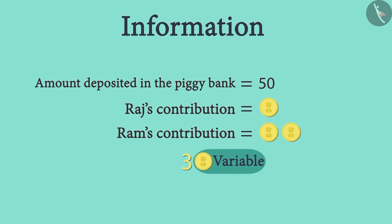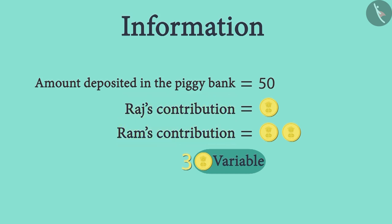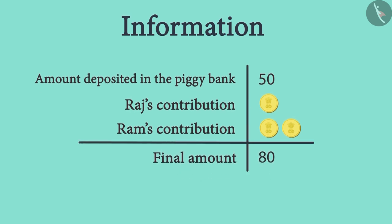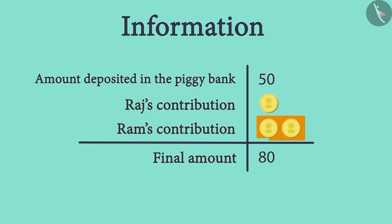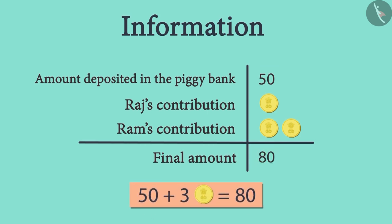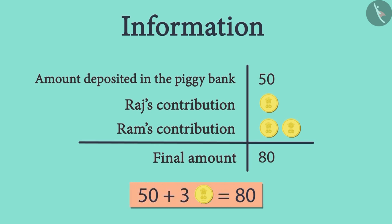Everything that represents an unknown quantity is called a variable. We know that the amount deposited in the piggy bank is 80 rupees. This table shows that the total of 3 coins and 50 rupees is equal to 80 rupees. We can write this information easily: the total of the parts on the left-hand side is equal to the final amount on the right-hand side. We have summarized all the information in a simple mathematical form.